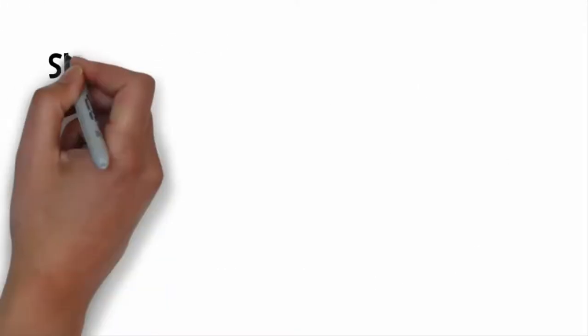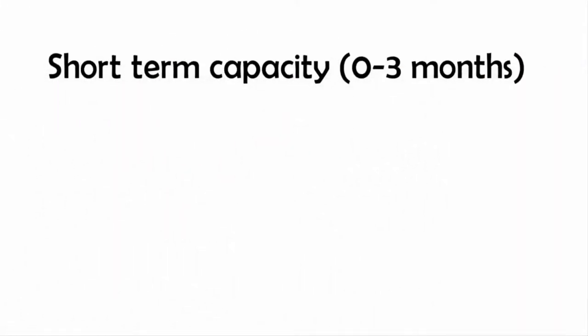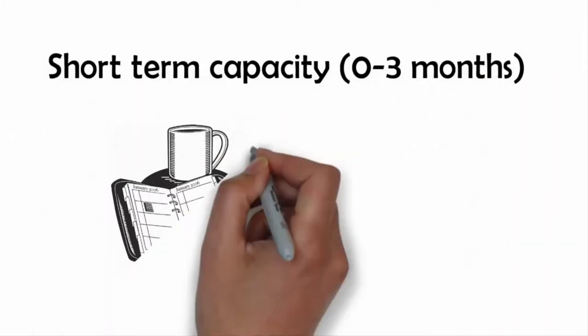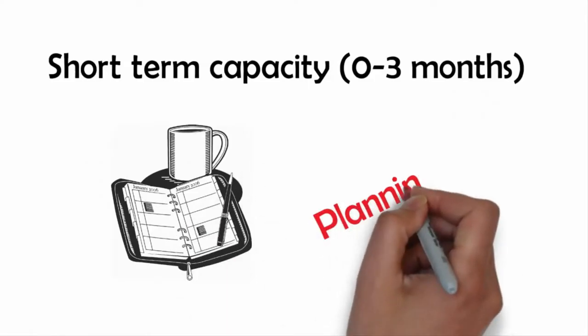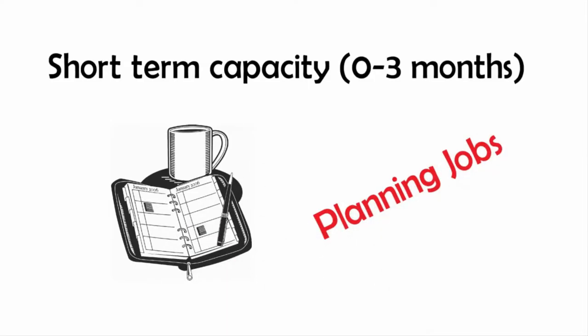According to the horizon, we can talk about short-term capacity: zero to three months. Our main drivers for capacity management are planning jobs, planning people, schedule machines.